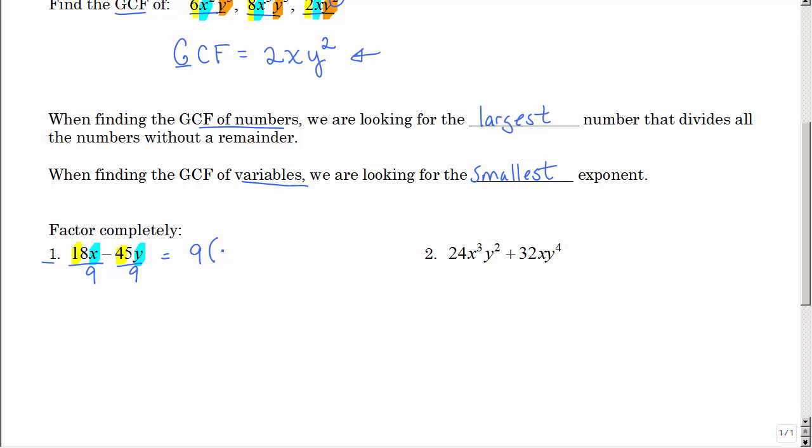So 18 divided by 9 is 2, and then that would leave you an x. So we are dividing 18x by 9. Now we're dividing negative 45 by 9, so that's negative 5, and that would leave you a y. So we're not just finding the GCF, we're factoring completely. Meaning you could check your answer, although it's not a 100% check. If you multiplied your answer, do you go back to the problem? Yes, you do.